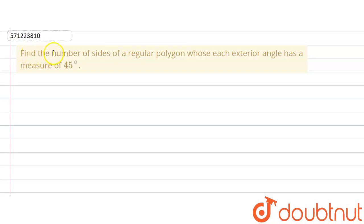The given question says that find the number of sides of a regular polygon whose each exterior angle has a measure of 45 degree.